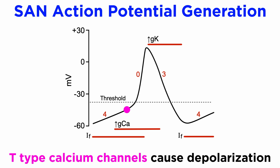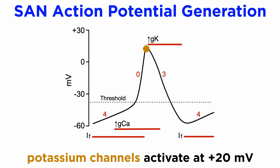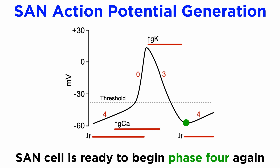Following HCN activation at negative 60 millivolts and subsequent depolarization to approximately negative 40 millivolts, T-type calcium channels are activated. This is a rapid influx of calcium and rapidly depolarizes the SAN cells, which is known as phase 0 of the SAN action potential. Now at plus 20 millivolts, potassium channels are activated and potassium ions flow down their electrochemical gradient from inside the SAN cell outward to the extracellular space. This loss of positively charged potassium ions from inside the SAN cells causes rapid hyperpolarization, setting up the SAN cell to begin phase 4.